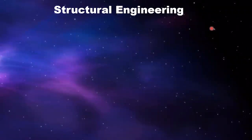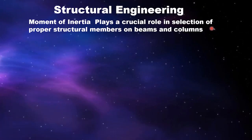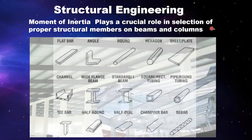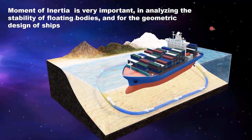Moment of inertia plays a crucial role in the selection of proper structural members — beams and columns. This is also the reason why structural engineers prefer to use I-shaped steel sections for long-span beams. Moment of inertia is also very important in analyzing the stability of floating bodies and for the geometric design of ships.